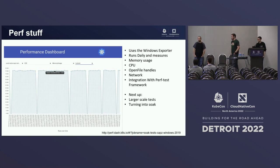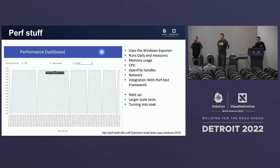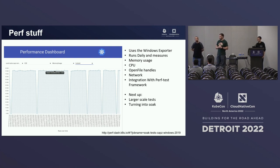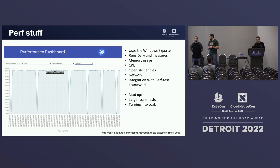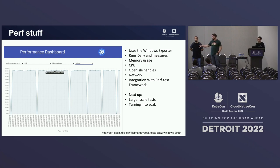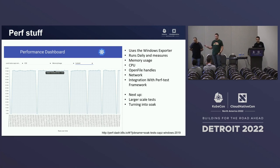Another thing we worked on this period was a Perf Dashboard. Using the Windows Exporter, we can run performance tests against the Windows cluster and monitor for any regressions in performance across changes we make. We're tracking things like memory usage, CPU, and network changes. Next we're planning larger-scale tests as well as soak testing to catch bugs on VMs long-term. This was done with PerfDash and is at a public URL — you can go view it. It's a great step forward for Windows in our performance story.